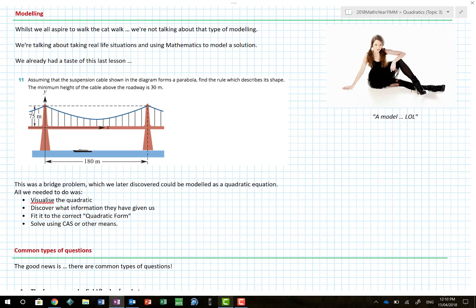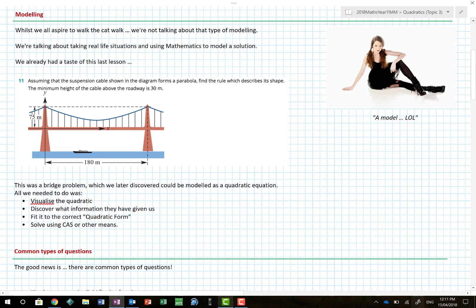We've already looked at modeling, which is where we take an actual real-life situation and put maths to it. We've already talked in a previous lesson about the bridge problem, where we basically said it could be modeled as a quadratic equation. We needed to be able to visualize and see the quadratic.